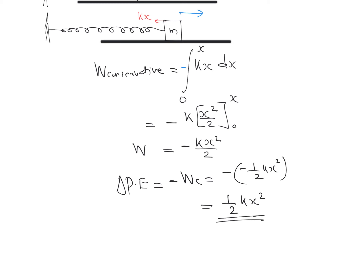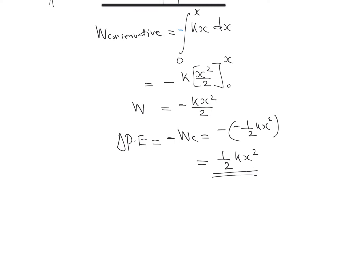At x = 0, when there is no extension and the spring is at its equilibrium position, the potential energy is 0. When the spring is extended or compressed by x, the potential energy becomes ½kx². For the calculation of potential energy stored inside the spring, we use the equation: PE = ½kx².